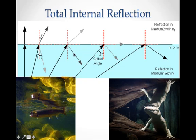As this incident angle keeps getting greater and greater, this refracted angle keeps bending more and more, and you'll finally get to a critical angle. The critical angle is the angle where the refracted wave is refracted at 90 degrees and would just be skimming along the surface.